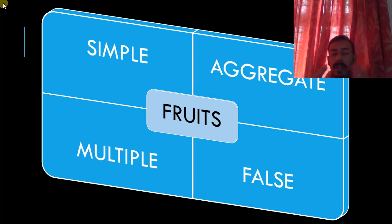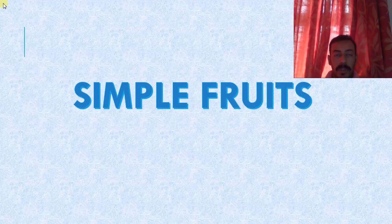So if you take a fruit, we can mainly classify it into four groups: simple, aggregate, multiple, and false types. So first one, we'll go for simple fruits.